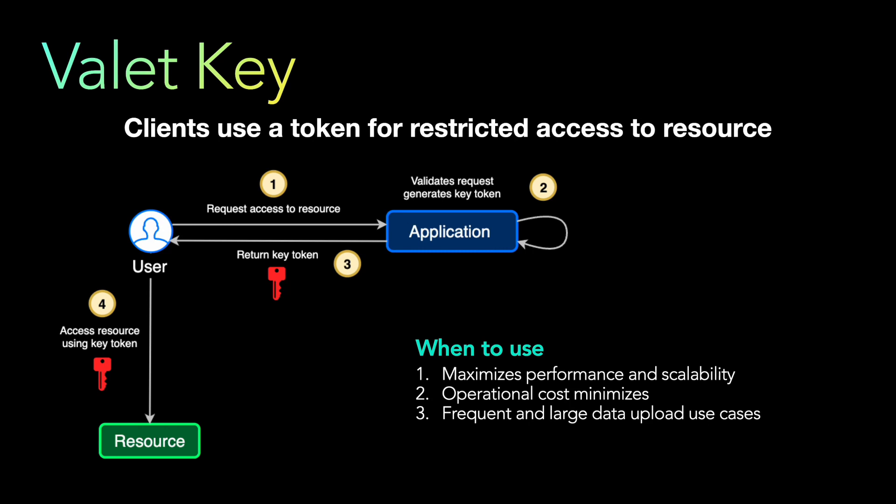Using the valet key pattern minimizes operational cost because you can give users direct access to resources like queues or storage, which is resource and cost efficient. It reduces network hops and round trips, and may reduce the number of compute resources needed for your service. These are the three primary security patterns that can be used in various scenarios. Security is one of the primary tenets of system design and application design, so hopefully this was useful.